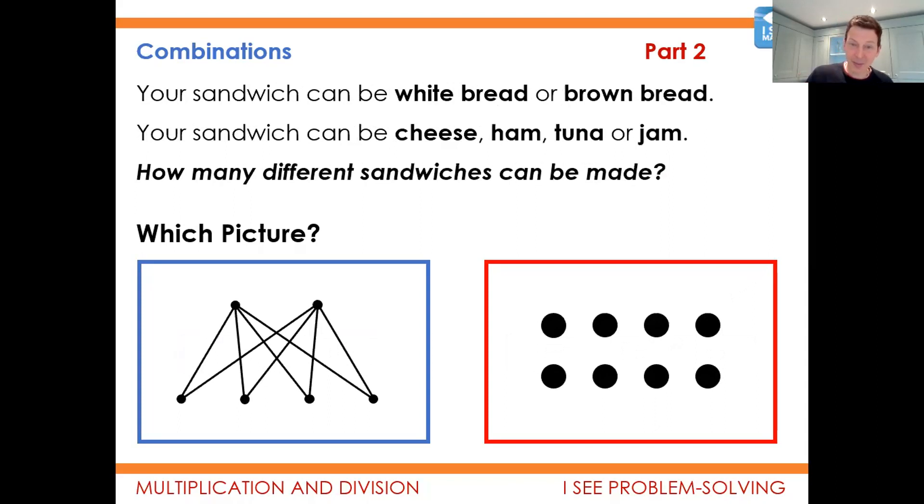And then other examples, including this combinations example, where the children are encouraged to see the picture on the left as representing how many combinations. And in this instance, looking at what the dots could represent, for example.